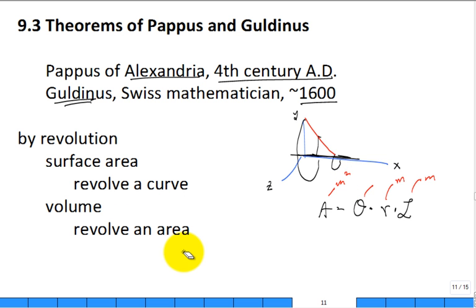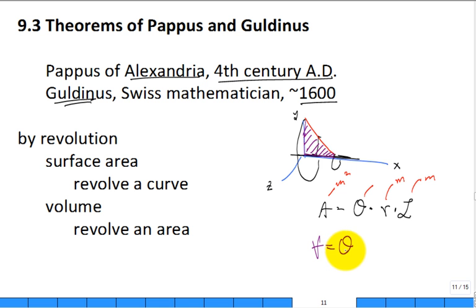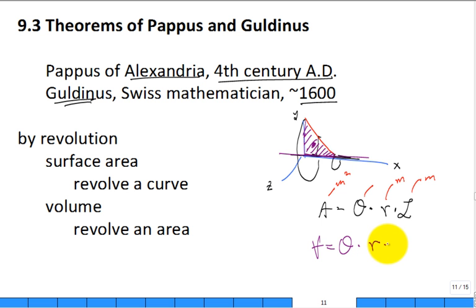And if you take a cross-sectional area — the area under that line — and sweep or revolve that, you've swept a volume. The formula is very similar: volume equals the angle of revolution (typically 2π, a full 360 degrees) times the perpendicular distance from the axis of revolution to the centroid of the area being revolved, times the generating area itself.